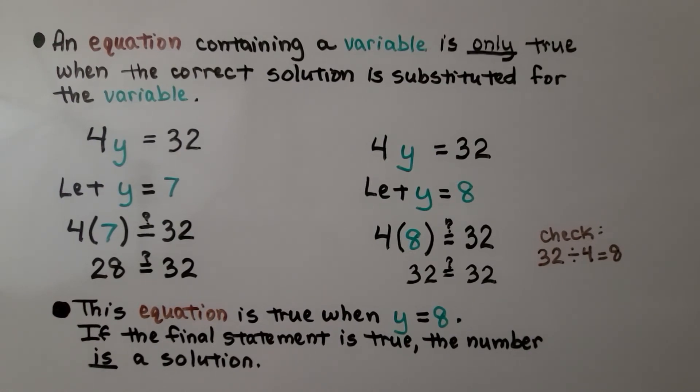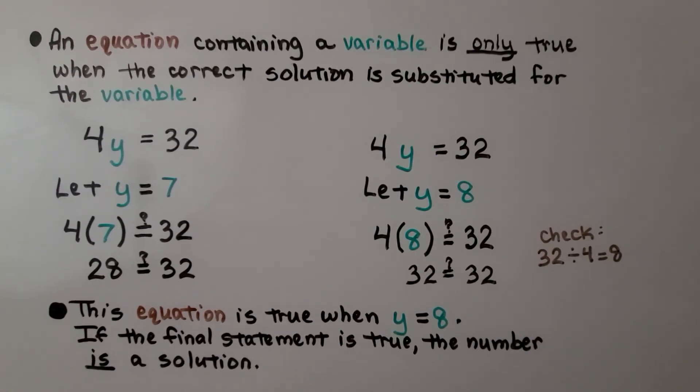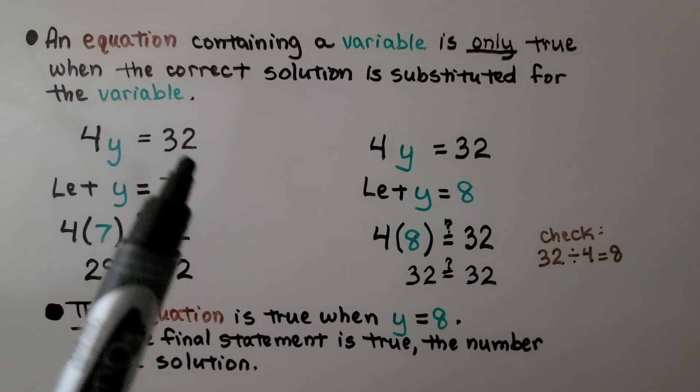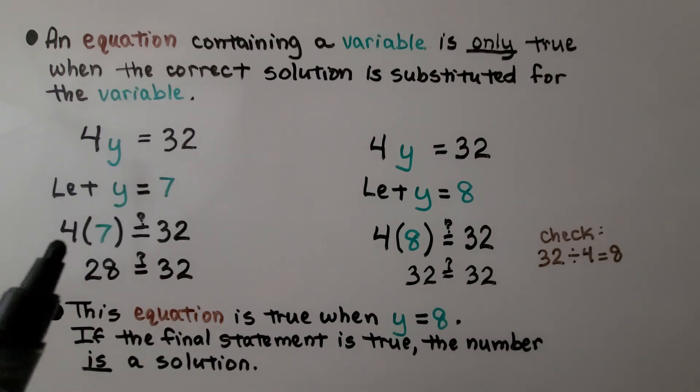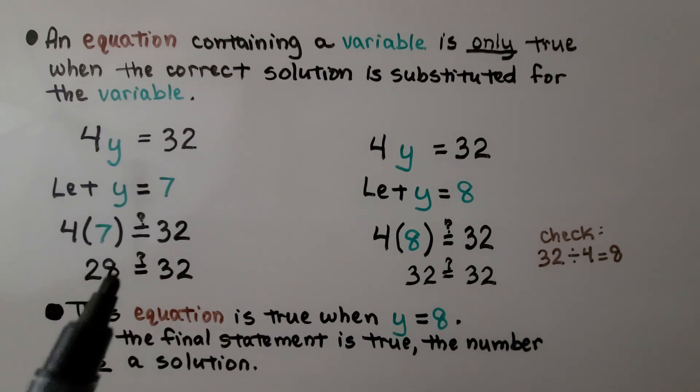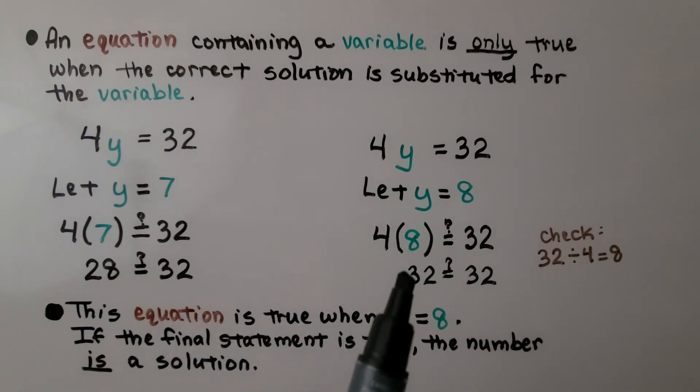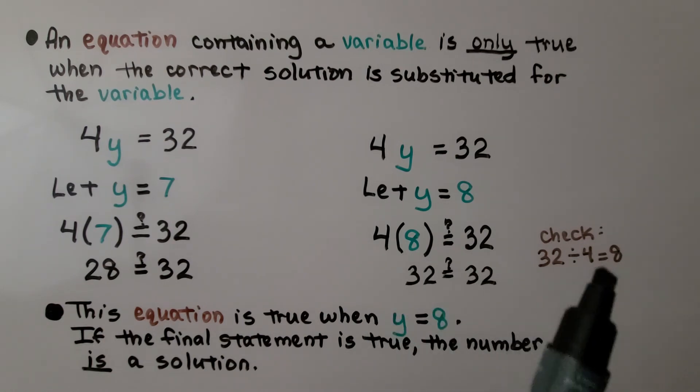An equation containing a variable is only true when the correct solution is substituted for the variable. We have 4y equals 32. If we let y equal 7, 4 times 7 is 28. So, that's a false statement. If we let y equals 8, 4 times 8 is 32. Yes, that's true. And 32 divided by 4 is equal to 8. So, we know we did the math correctly. So, this equation is true when y is equal to 8. If the final statement is true, the number is a solution.